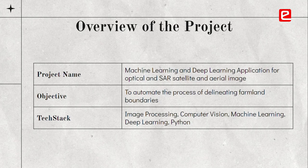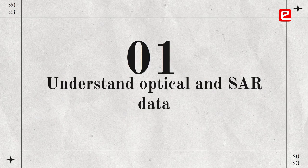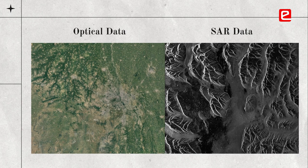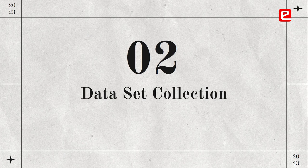The main objective of the project was to automate the process of delineating farmland boundaries. The first task was to understand the difference between optical and SAR data. Both are remotely sensed data but they differ: optical data captures things such as colors, while SAR data captures things such as texture of a given plane. Both contain information crucial for delineating farmlands.